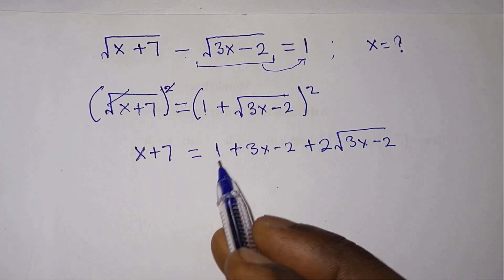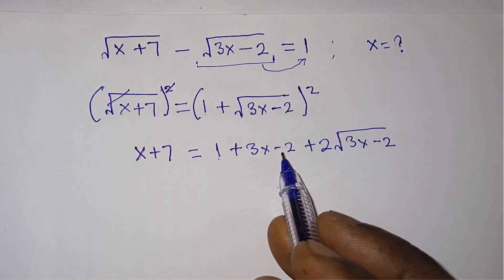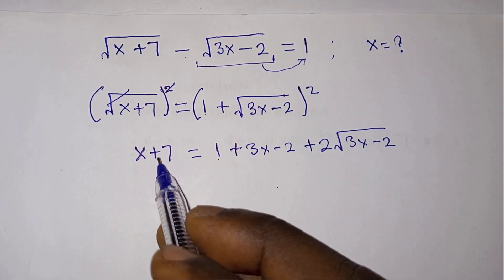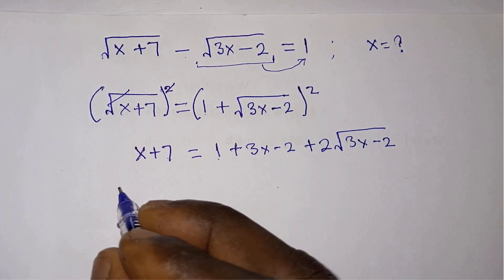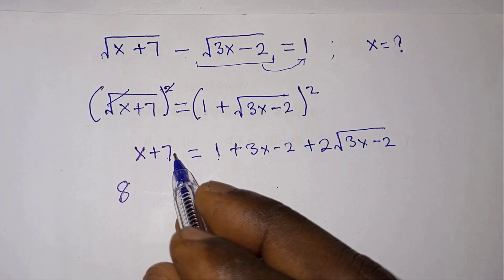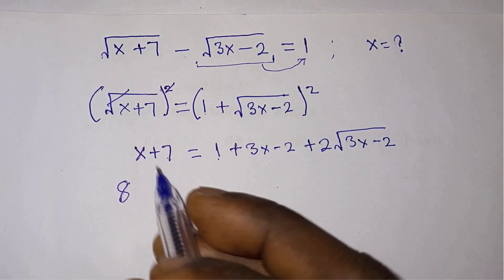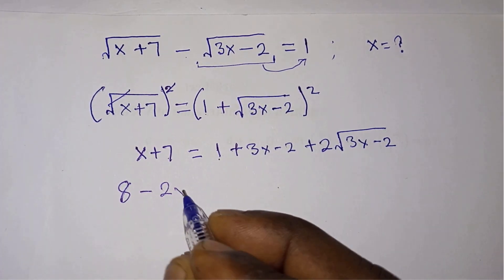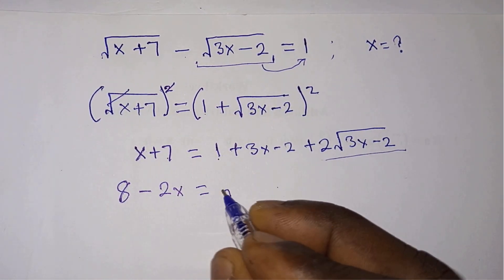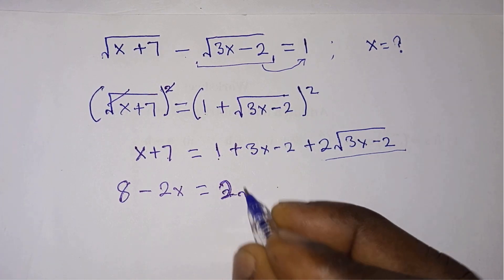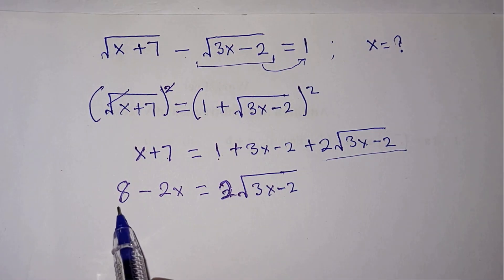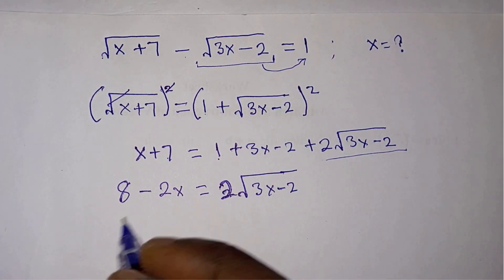Now let's move all the terms without a square root to the left hand side. We have 1 minus 2 — that is negative 1, but it crosses the equation sign to be positive 1. Plus this 7 making 8, so you have 8. Then 3x comes here to be negative 3x. So 8 minus 3x plus x — that is 2x — is equal to 2 square root of 3x minus 2.